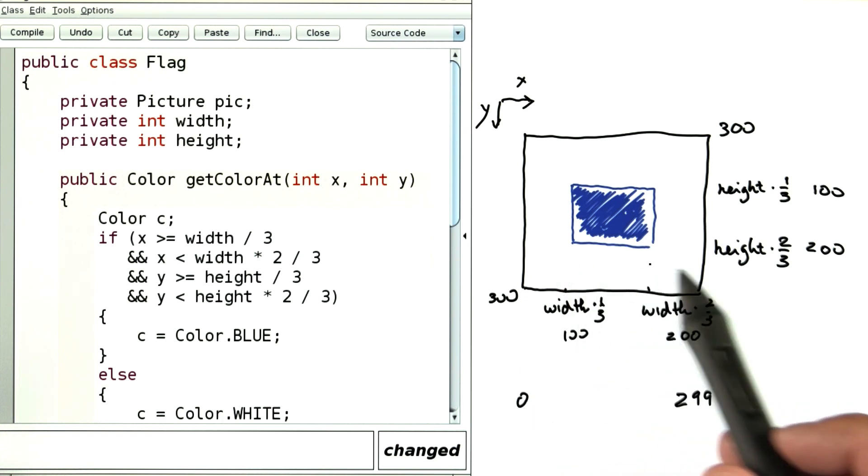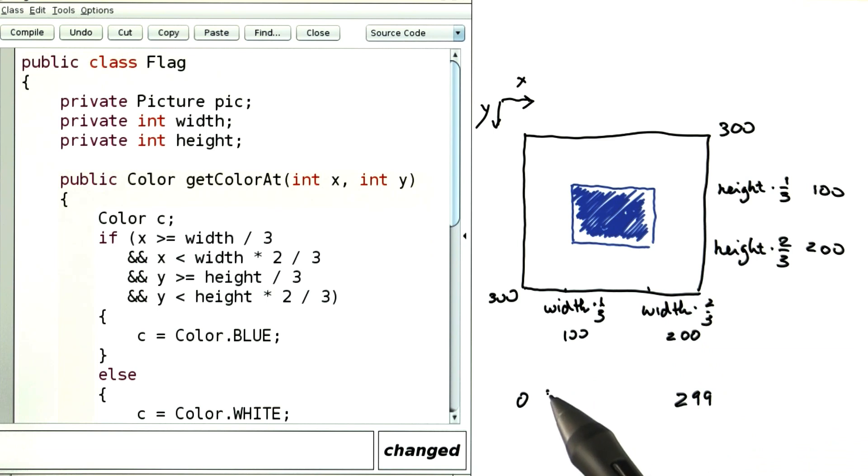We want each of these three areas to have equal size, so the first one goes from 0 to 99, the next one from 100 to 199, and the last one from 200 to 299.